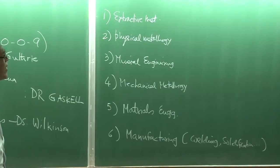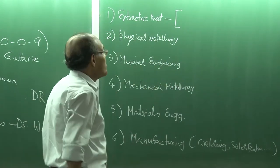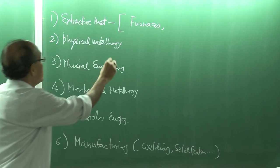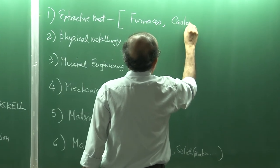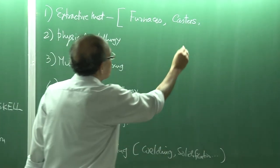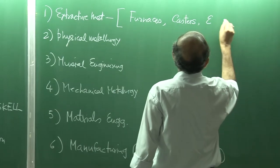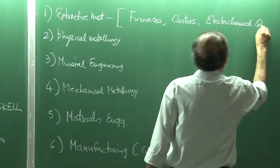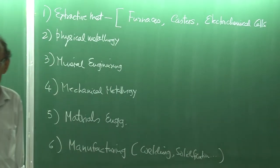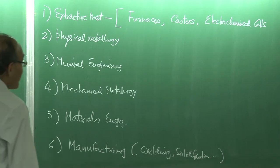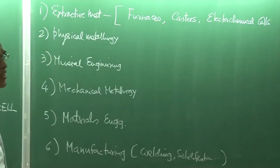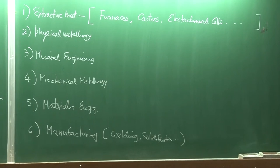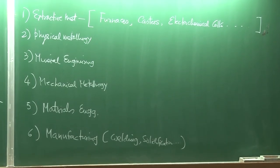In extractive metallurgy, what we deal with basically are furnaces. We have casters for conversion of liquid, and we have electrochemical or electro-metallurgical processes — for example, cells where metals are extracted. So we have pyrometallurgical processes, hydrometallurgical processes, and electro-metallurgical processes. We can make a lot of discussion and illustrate the application of transport phenomena in each of these contexts.